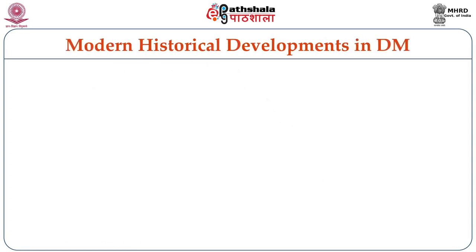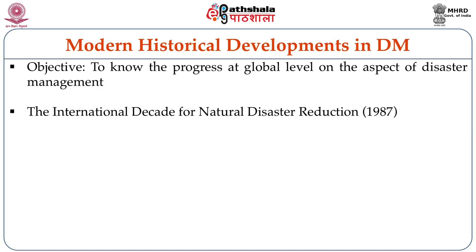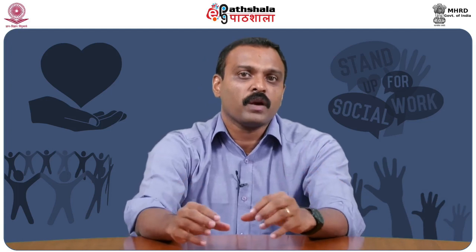Let us look at the modern historical development in disaster management. The objective is to know the progress at global level. The International Decade for Natural Disaster Reduction happened in 1987, the Yokohama Strategy in 1994, the Hyogo Framework for Action in 2005, and the Sendai Framework came in 2015. On the development side, the Millennium Development Goals came in 2000 and the Sustainable Development Goals came in 2015. There is a link between disaster management progress and development management — how development is connected to disasters and how we should include aspects of disaster management in development planning.